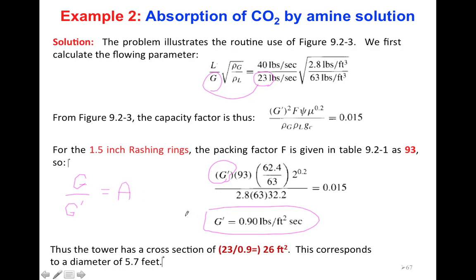G over G' gives you A. The cross-sectional area is G mass flow rate divided by mass flux. For G you have 23, for G' you have 0.9. If you divide them, you will get your A, 26 square foot. Then you can use A equals π over 4 times d². You have A, π is 3.14. From this equation you can find d, that gives you 5.7. That will be the diameter of your column, 5.7 foot.